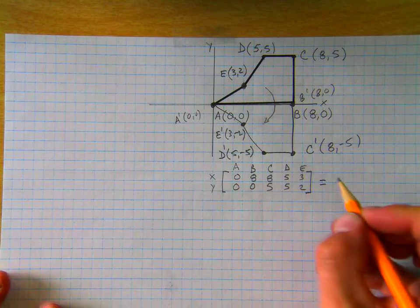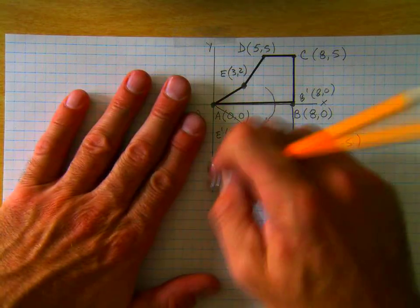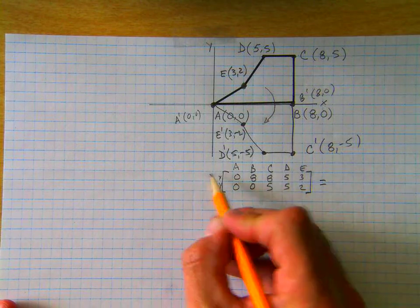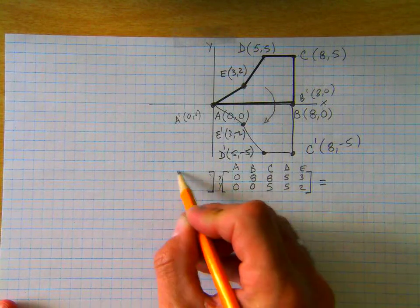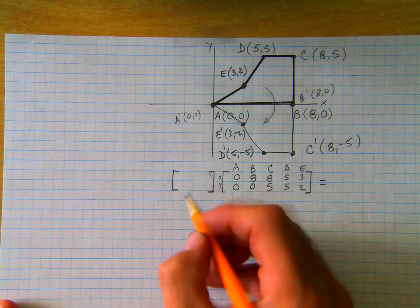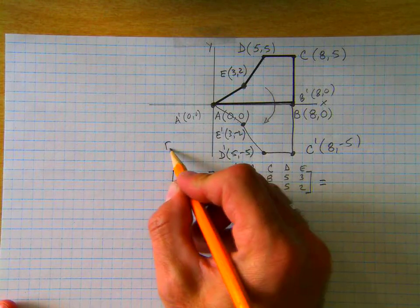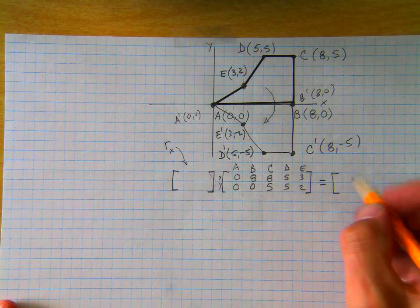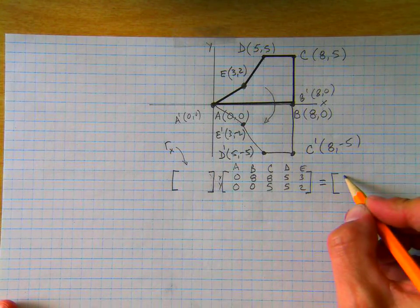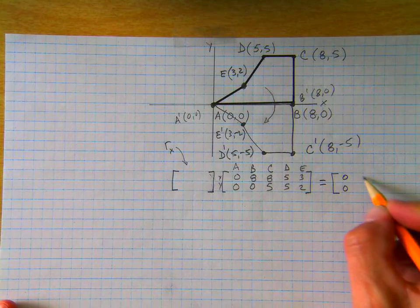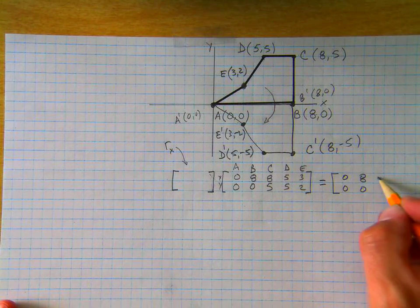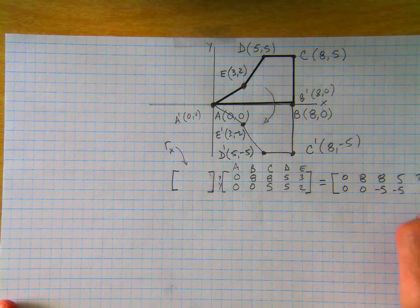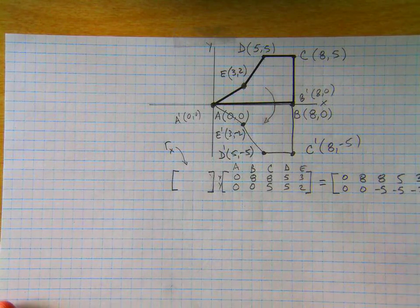Now, what we want to do is multiply our original pre-image matrix by a reflection over the X-axis matrix such that we get the figure in the new location, which is 0, 0, 8, 0, 8, negative 5, 5, negative 5, and 3, negative 2.